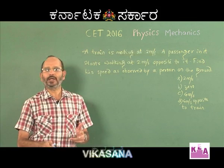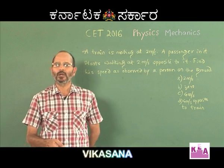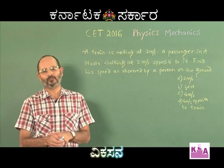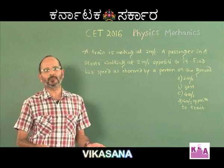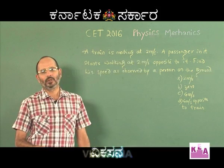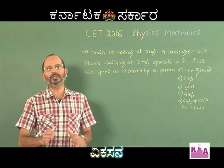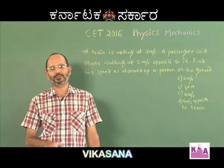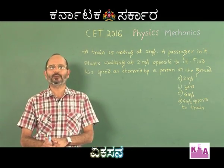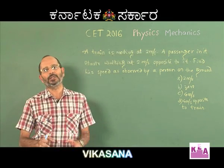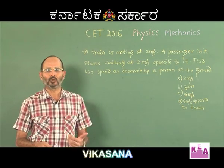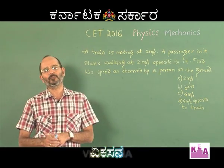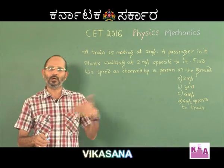Say there are two particles A and B. A is moving with velocity VA and B is moving with velocity VB. Both are independent and can move in any direction. You can write either the velocity of A with respect to B or B with respect to A. Mathematically, the velocity of A with respect to B is VA minus VB. Most students do not realize this is a vector difference — velocities are vector quantities, so VA minus VB must be subtracted vectorially. Similarly, velocity of B with respect to A is VB minus VA, also subtracted vectorially.